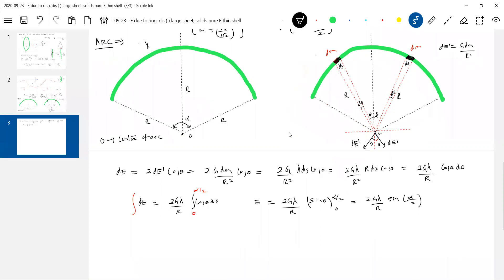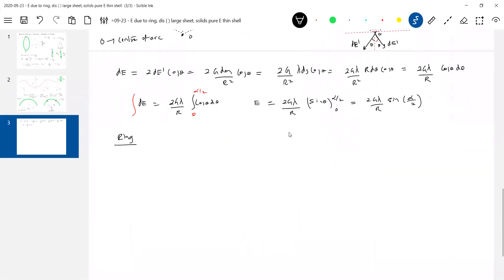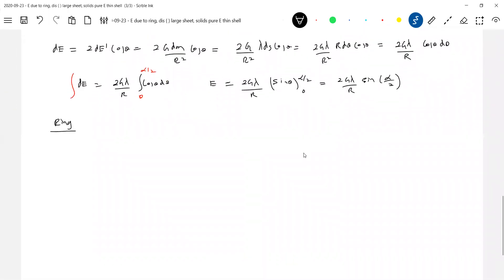Now, first ring, complete ring at the center of the ring. Already we know ring, no? At the center of the ring it is 0. So we will just cross verify with this one. Radius r, let mass be this one. So what is alpha? Alpha will become equal to how much? 2 pi. Substitute this at the center of the ring. 2g lambda r sin 2 pi by 2. I think it will be 0. So already we have verified with that.